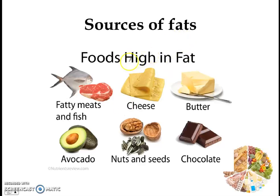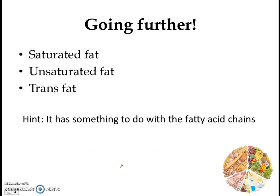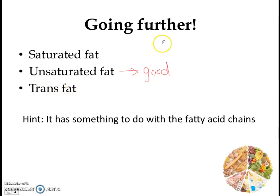Now, what are some sources of fats? Foods high in fats include cheese and butter, but you might be surprised to find fat in certain plants like the avocado. Nuts and seeds also have lots of good fats. If you want to go further, look up the difference between saturated fat and unsaturated fat — unsaturated fats are generally considered better for your health. There's also trans fat, which has been talked about recently, and it has something to do with the fatty acid chains.